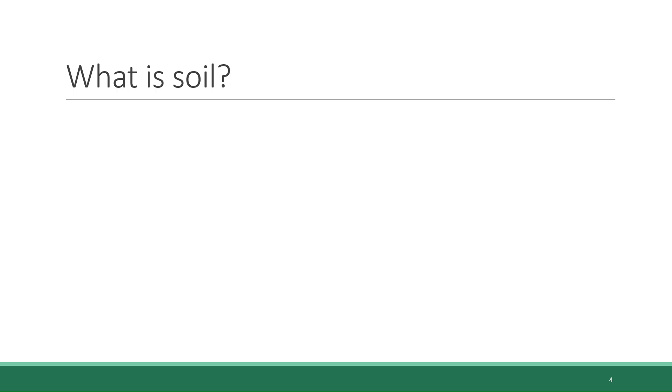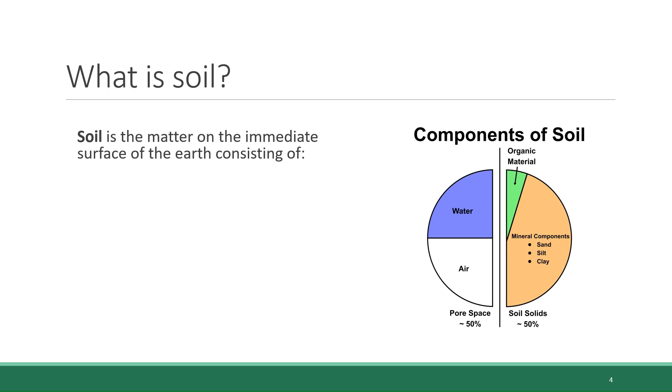What is soil? You probably already have an intuitive sense of what soil is. It's the matter found on the immediate surface of the earth, and it consists of multiple components. There's mineral matter - you might think of this as dirt. There are three types of mineral matter, which are sand, silt, and clay.